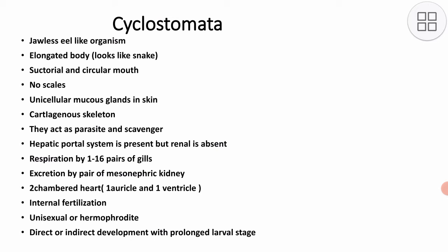They have a cartilaginous skeleton. They act as parasites and scavengers. They have a hepatic portal system but the renal portal system is absent. Respiration is by 1 to 16 pairs of gills. Excretion is by a pair of mesonephric kidneys.